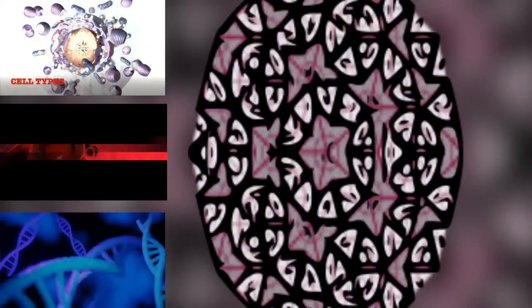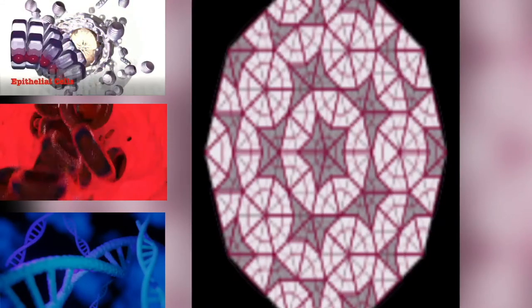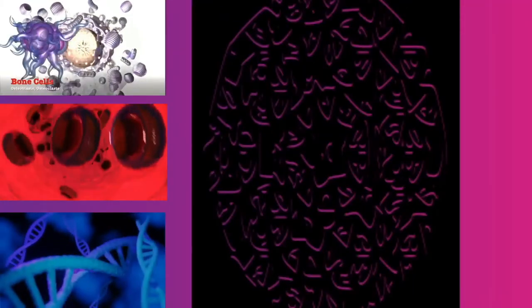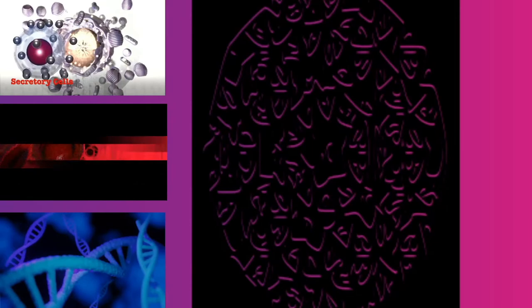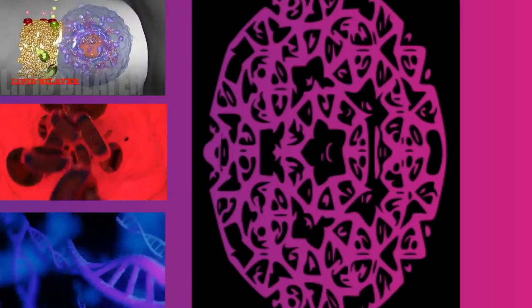Animals have no multicellular haploid phase, but each plant generation can consist of haploid and diploid multicellular phases. Eukaryotes have a smaller surface area to volume ratio than prokaryotes, and thus have lower metabolic rates and longer generation times.